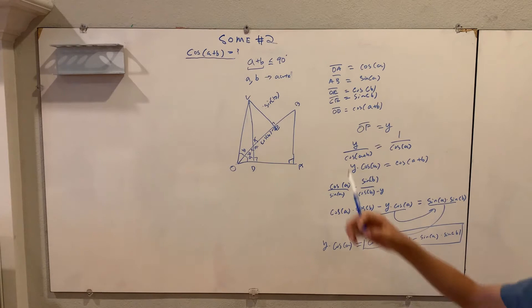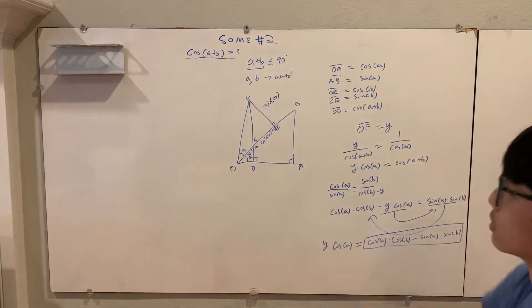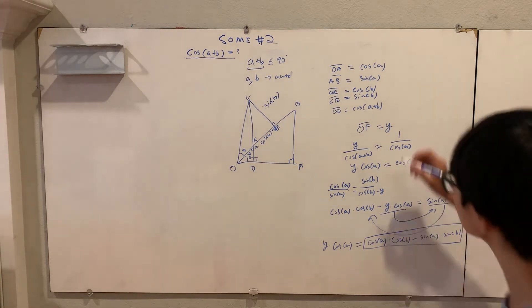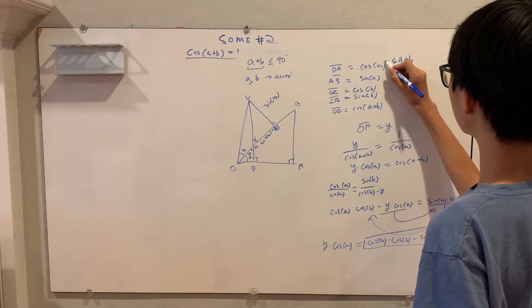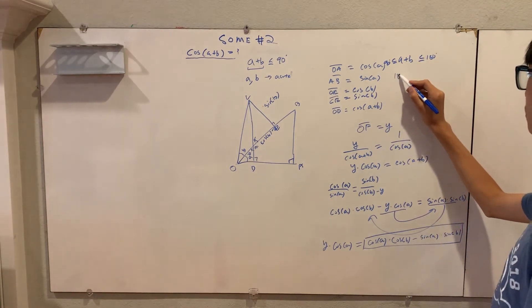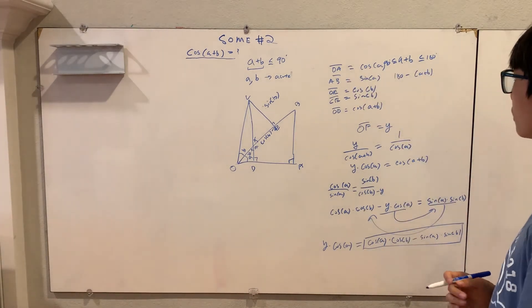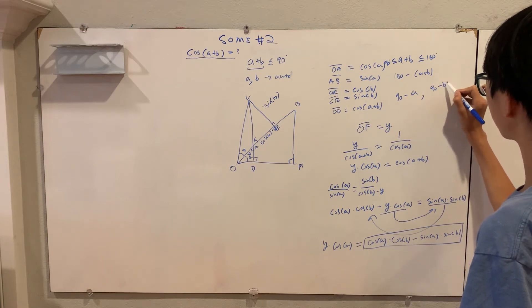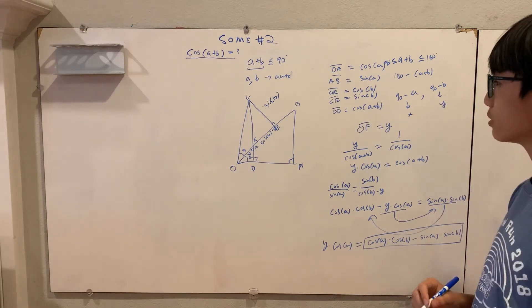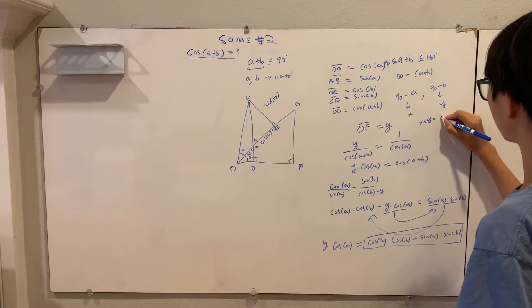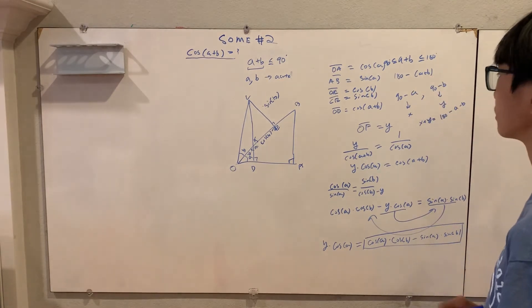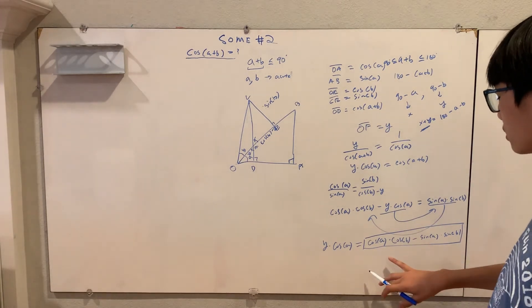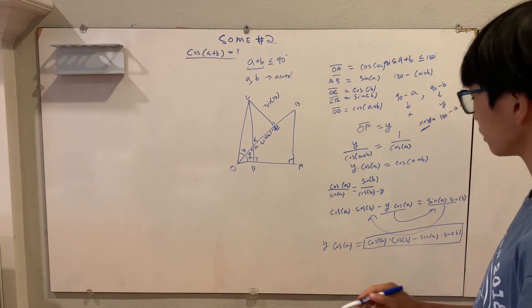But we've only proved this for acute angles a and b that add up to less than 90 degrees. How do we prove this if a plus b is larger than 90 degrees — if it's obtuse? Well, notice that if a plus b is between 90 and 180 degrees, then 180 minus (a plus b) would be an acute angle. Moreover, we're still assuming a and b are acute, so we can find their complementary angles: 90 minus a and 90 minus b. Let's call these x and y. So x plus y equals 180 minus a minus b, or 180 minus (a plus b). So x plus y will be acute if a plus b is obtuse, which means we can apply our equation to x plus y.